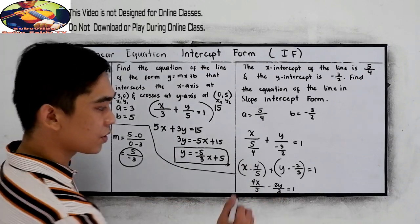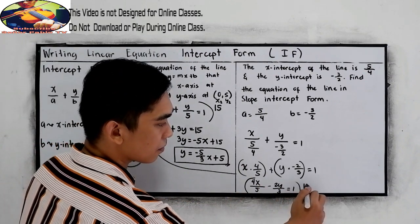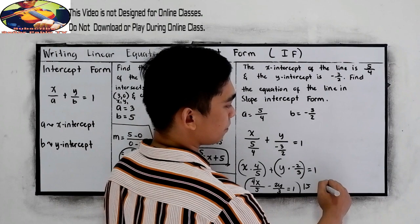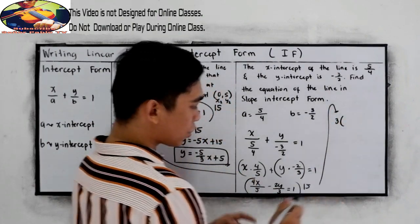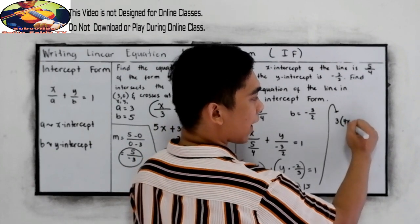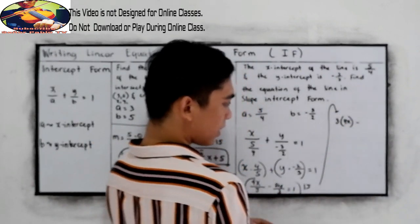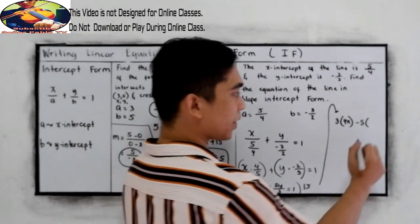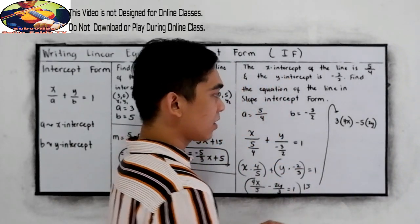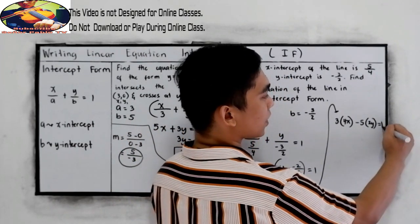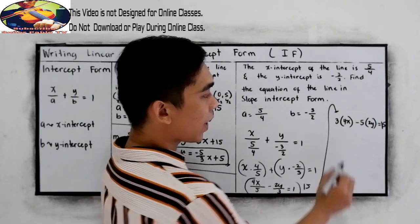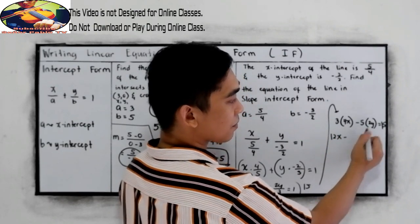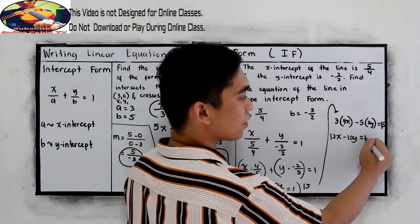Get the LCD, then multiply by 15. Now, 15 divided by 5, that is 3. We are going to multiply our numerator, 4x, minus 15 divided by 3, that is 5, multiply to our numerator, 2y, is equal to 1 times 15, 15. Now, we have 3 times 4x, 12x, minus 5 times 2y, 10y is equal to 15.